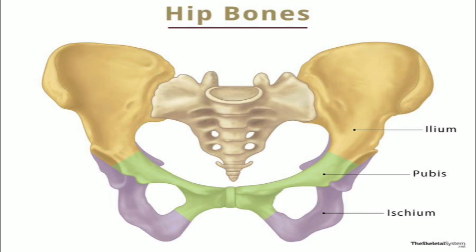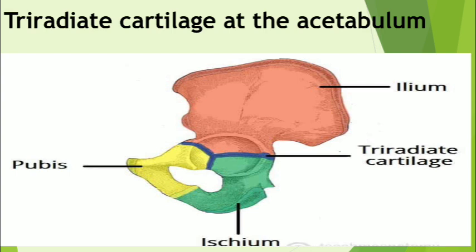The internal or pelvic aspect of the hip bones bounds the pelvis and forms its lateral walls. The external part of the pelvic girdle gives attachments for the lower limb muscles. So the hip bone is made up of the ilium, ischium, and pubis.